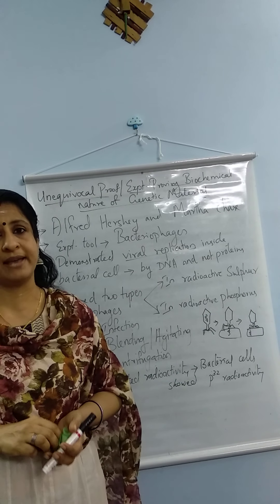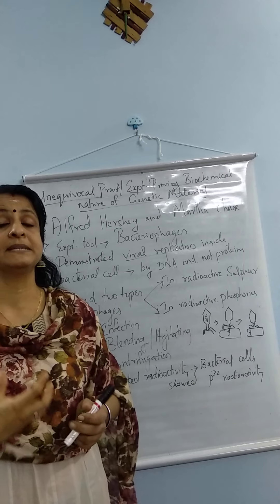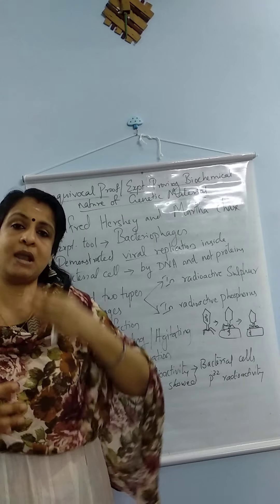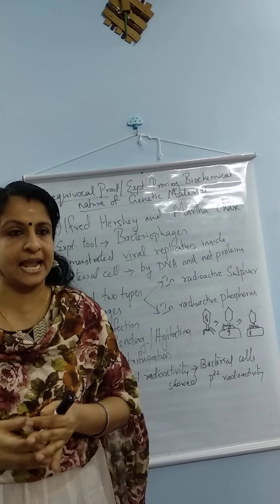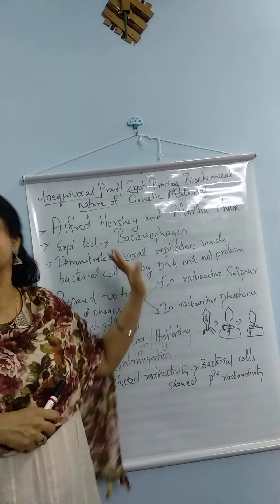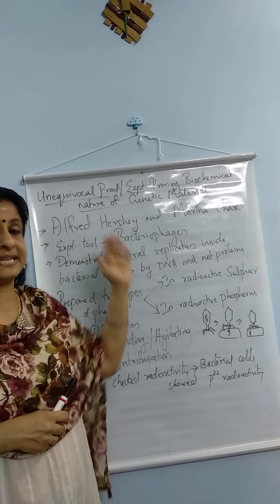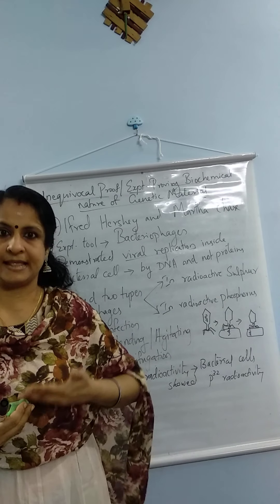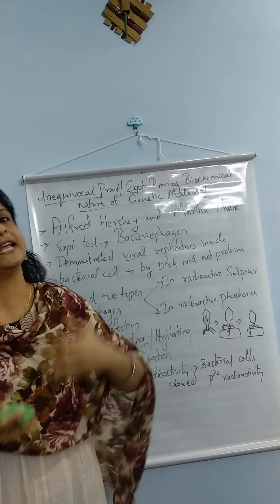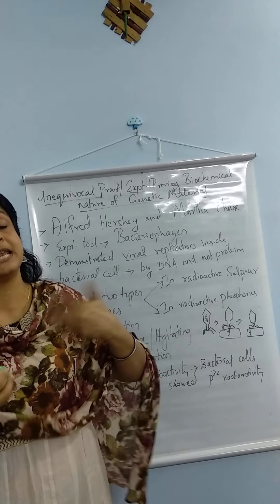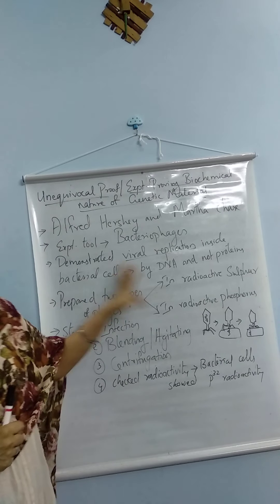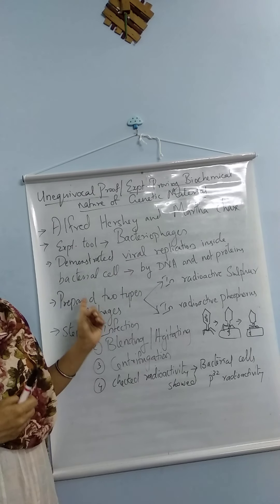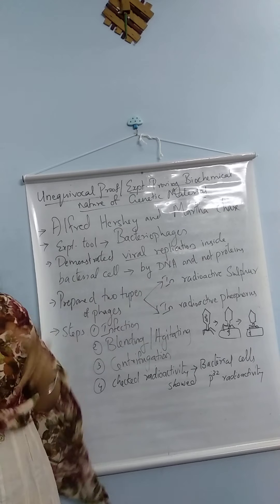Like all other viruses, bacteriophages become active and show signs of life — that is replication or reproduction — only when they enter inside a host cell. When the bacteriophage enters a bacterial cell, it uses the machinery of the host cell to make its own copies or replicas and increase in number. They developed two types of bacteriophages for the experiment.